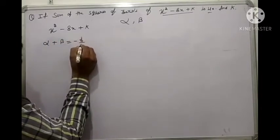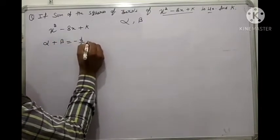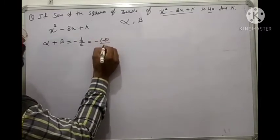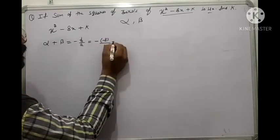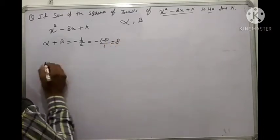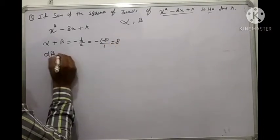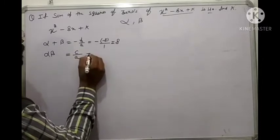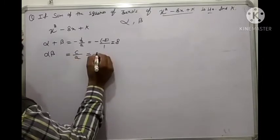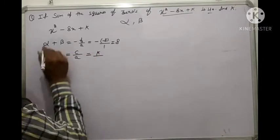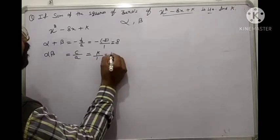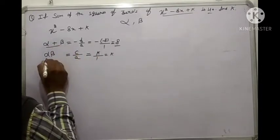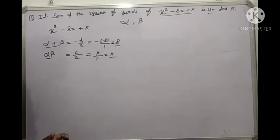The sum of zeros is minus b upon a, which is minus of minus 8, and a is equal to 1, so the sum of zeros is 8. The product of zeros is c upon a, which is k upon 1, so the product is k.